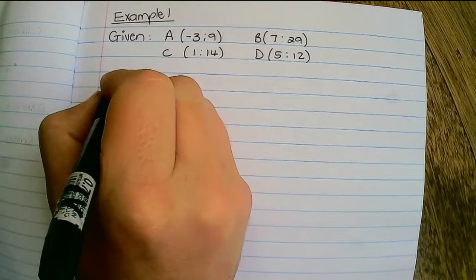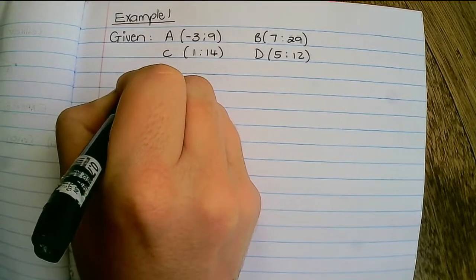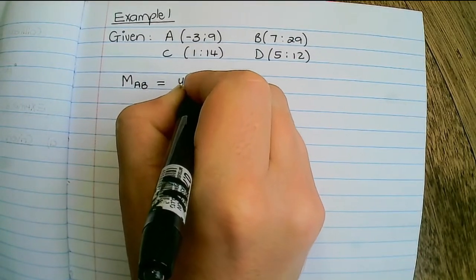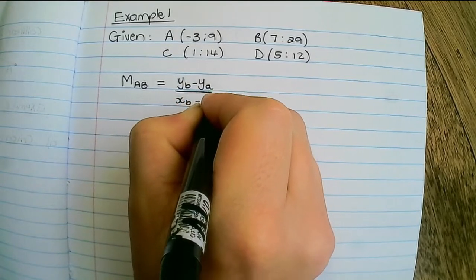Now if we want to find the gradient of AB, we would say it's the difference of y values over the difference of x values.